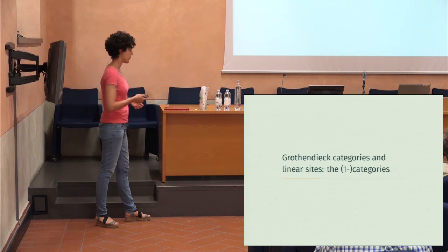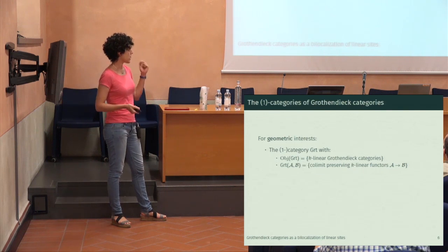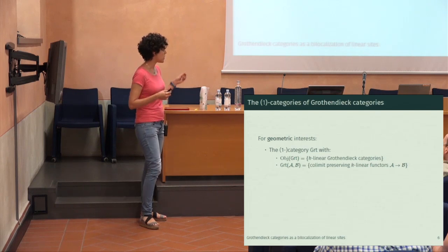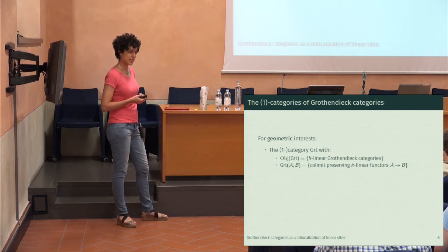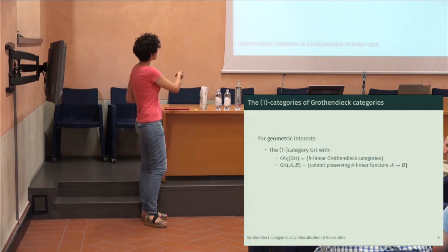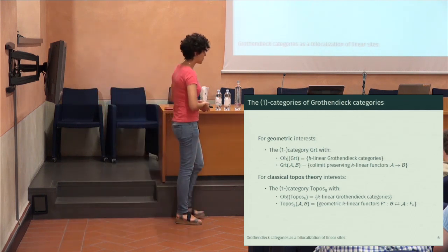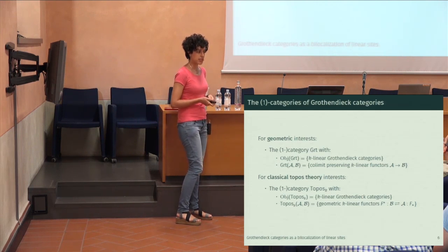Let me explain the morphisms we are going to use. For geometric interests, I take a category GRT of k-linear Grothendieck categories, and my morphisms are co-continuous — that is, colimit-preserving — k-linear functors. You might ask why not geometric morphisms. For geometric reasons, I would like to have non-flat functors, to consider non-rings which are not flat over the base. For classical topos theory interest, one considers the geometric k-linear morphisms, where both adjoints are k-linear and the left adjoint, the inverse image, preserves finite limits.